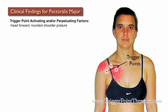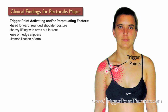A lot of times when your client complains of chest pain, they will also complain of pain between the shoulder blades. Some activating and perpetuating factors for pectoralis major trigger points include the head forward, rounded shoulder posture, heavy lifting with the arms out in front of the body, use of hedge clippers, immobilization of the arm, chilling of the pec major muscle, high levels of anxiety, and possibly pain from a previous heart attack.